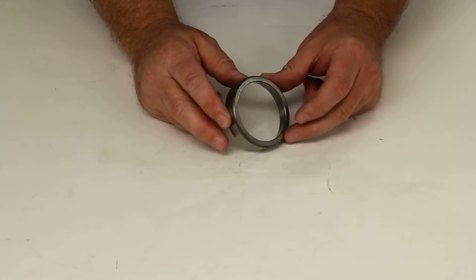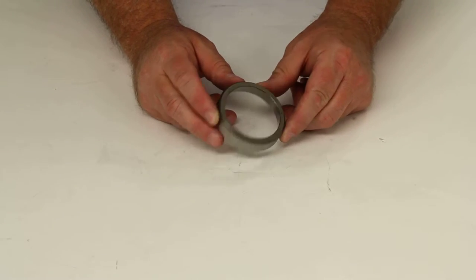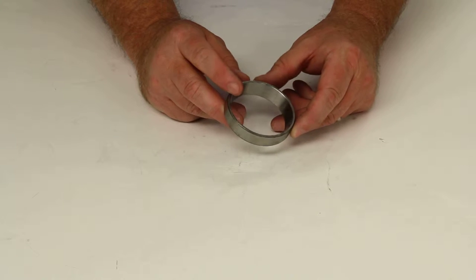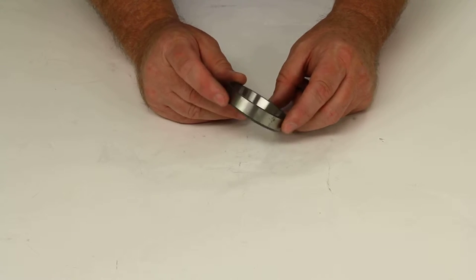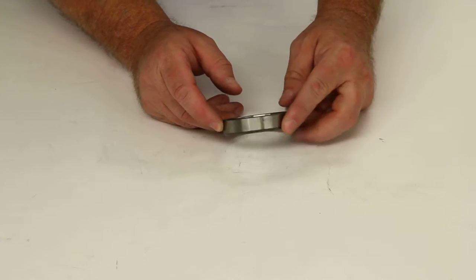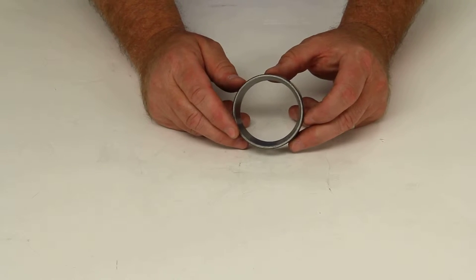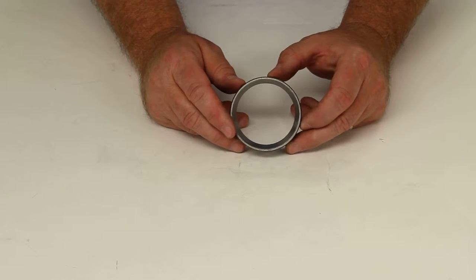Today we're going to review part number LM48510. This is the Redline bearing race, and this race is designed to fit the inner bearing with part number LM48548.